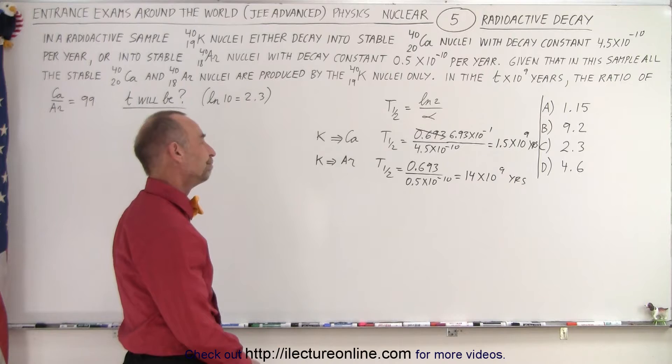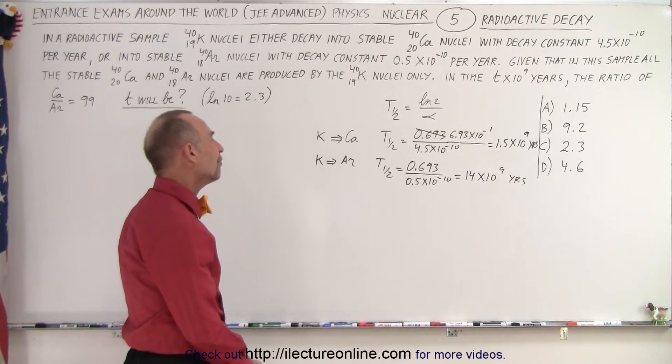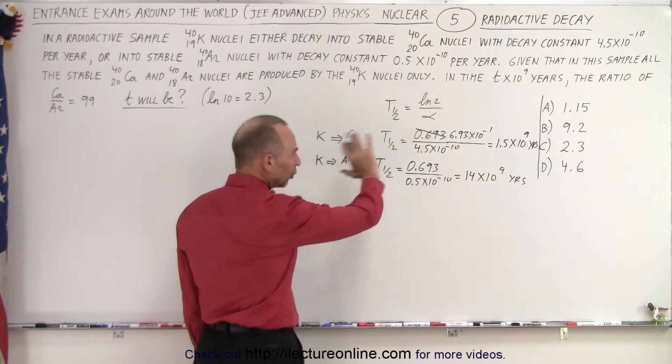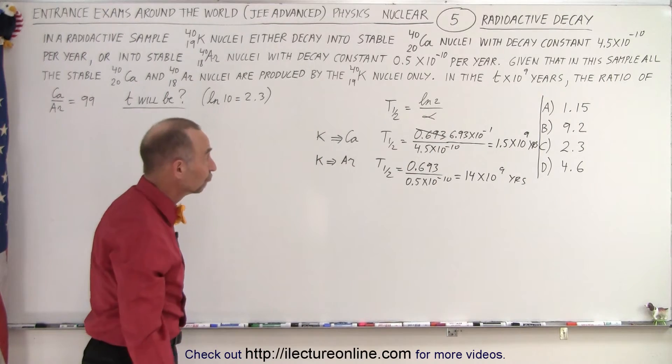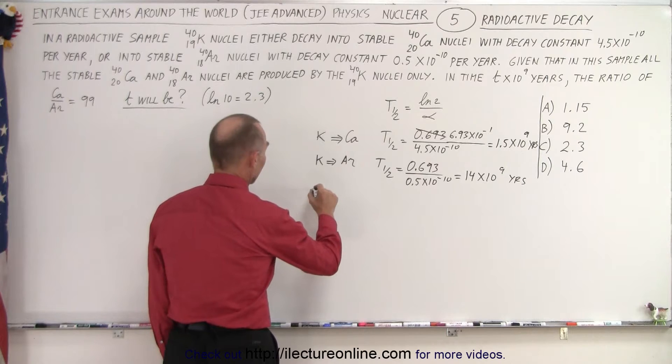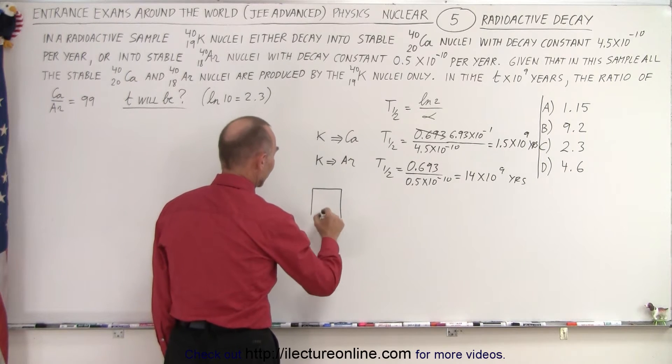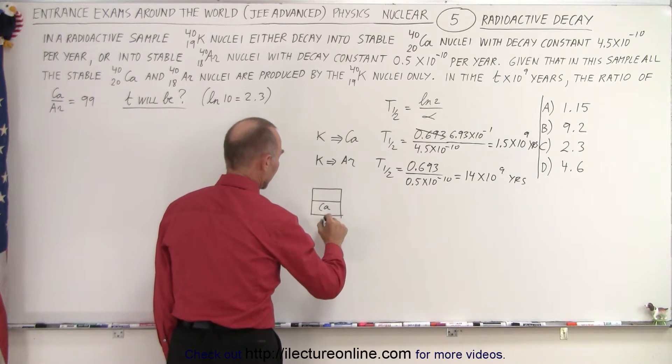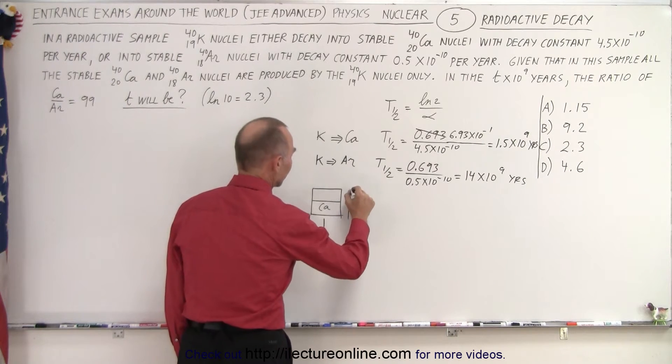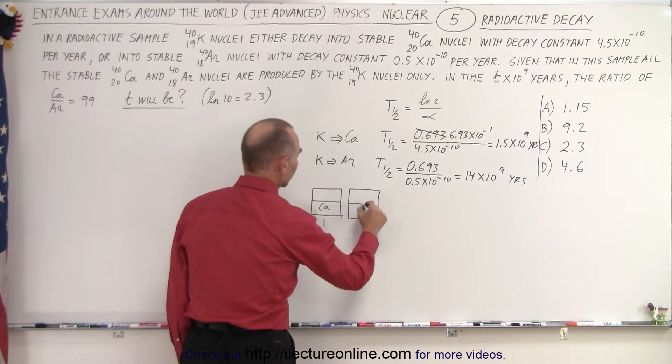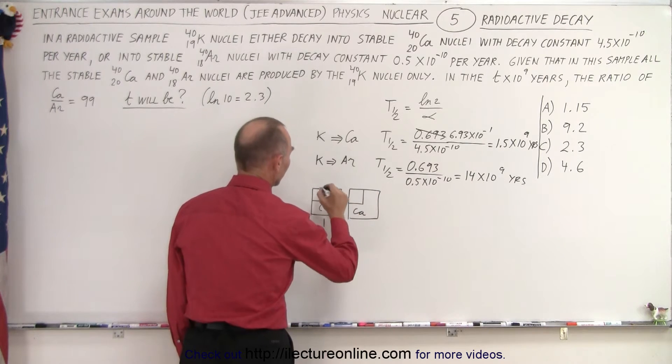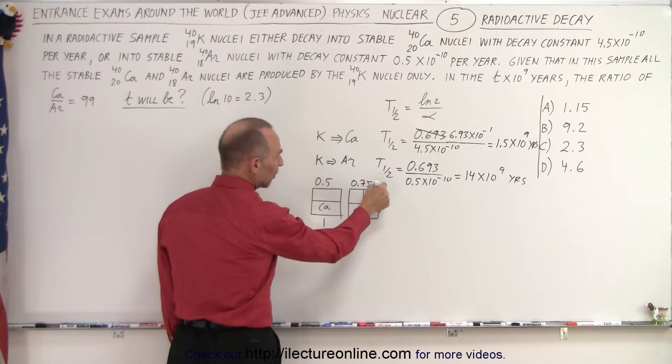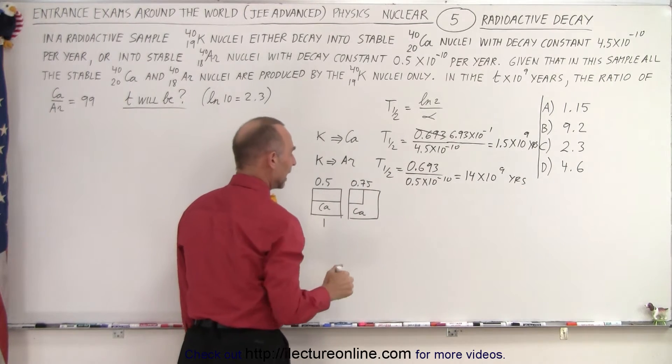Okay, so now we have the half-lives. Now, if we ignore the argon for a moment, if we assume that it only decays to calcium, then imagine this: after one half-life, half of it will be calcium. After two half-lives, it would be three quarters, 0.75. And notice, you always take the remainder, half of the remainder, and you add it.